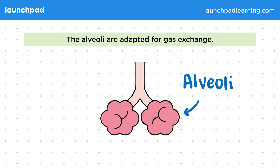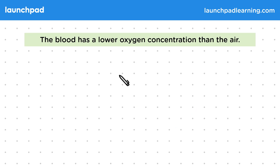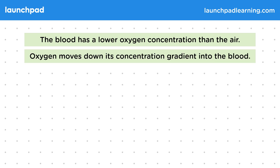So why does diffusion occur in the lungs? The blood has a lower oxygen concentration than the air. Remember that the blood that's in the lungs is returning from the body, and oxygen has been absorbed into the tissues for respiration, so the oxygen concentration is now low. Oxygen moves down its concentration gradient into the blood.